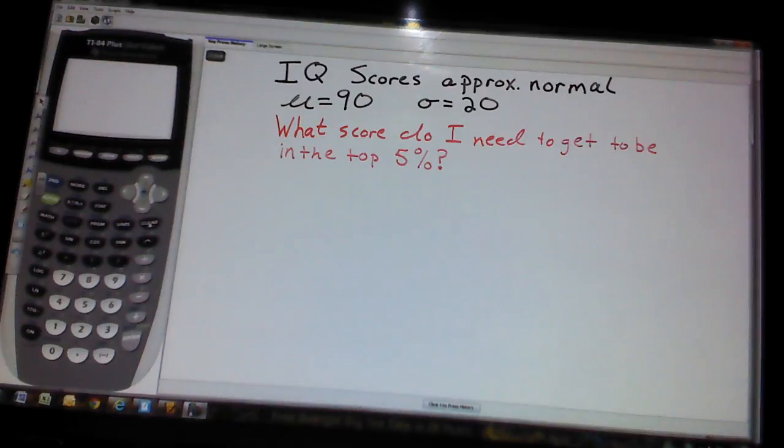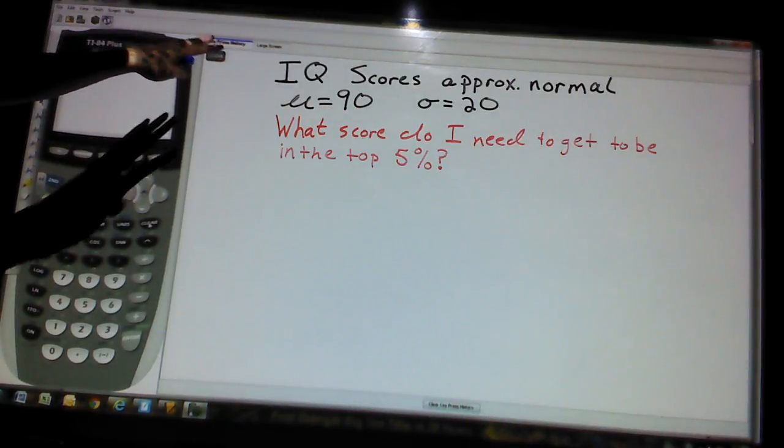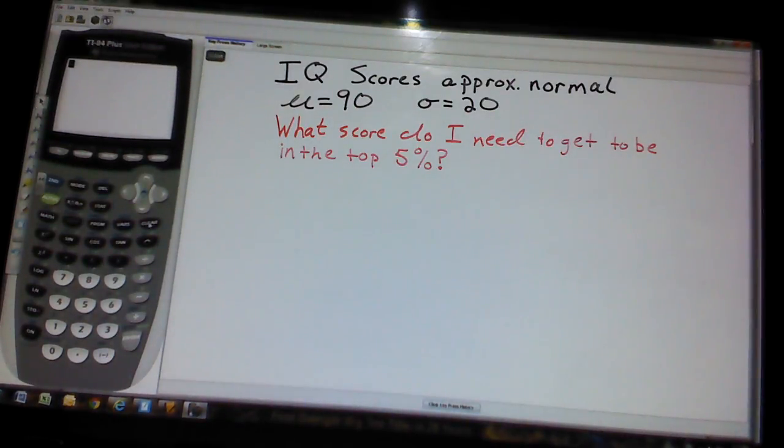For instance, I got IQ scores again, they're approximately normal, it's got a mean and a standard deviation. The question they could ask is, what score do I need to get to be in the top 5%?